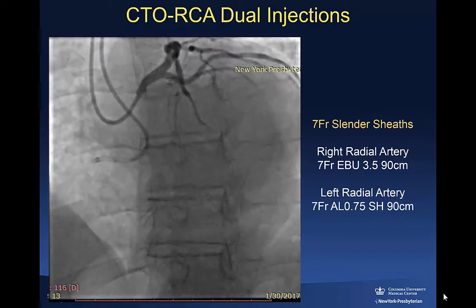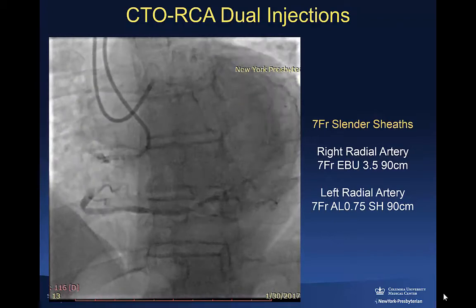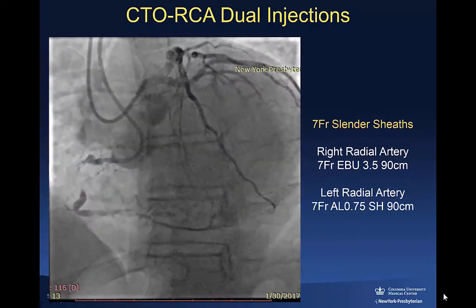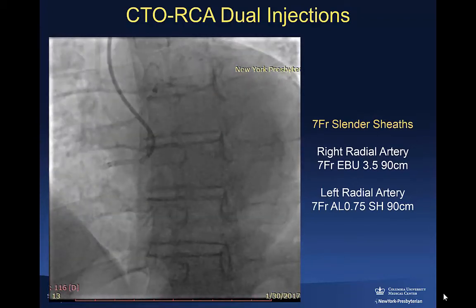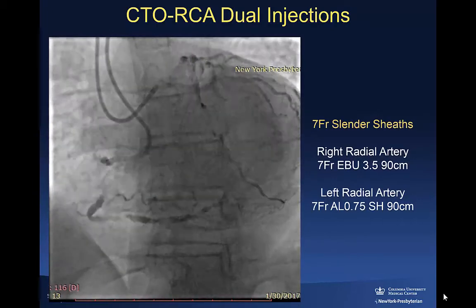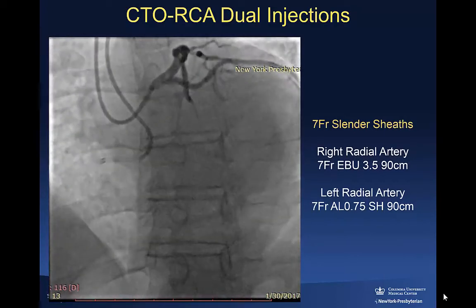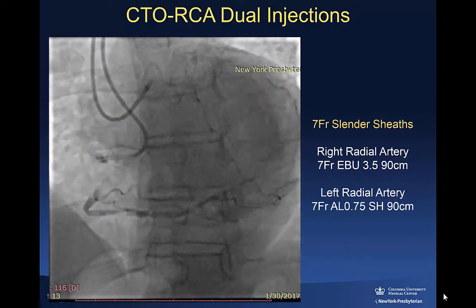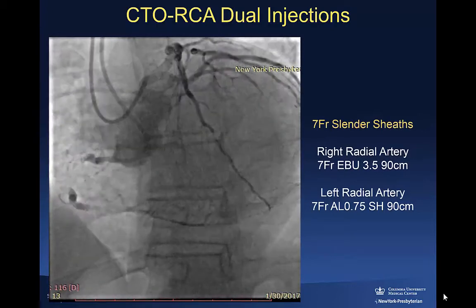This is a biradial case. Over the last five months at Columbia, we've switched almost 100% biradial. Two rare exceptions are cases post-bypass where we would use one femoral and one radial. Back to the case — this is a patient that was very symptomatic with inferior wall ischemia on two medications. Dual angiograms with an AL1 with side holes in the right coronary artery and an EBU35 on the left, seven French, introduced through seven French slender sheaths, which are essentially now the diameter of six French.